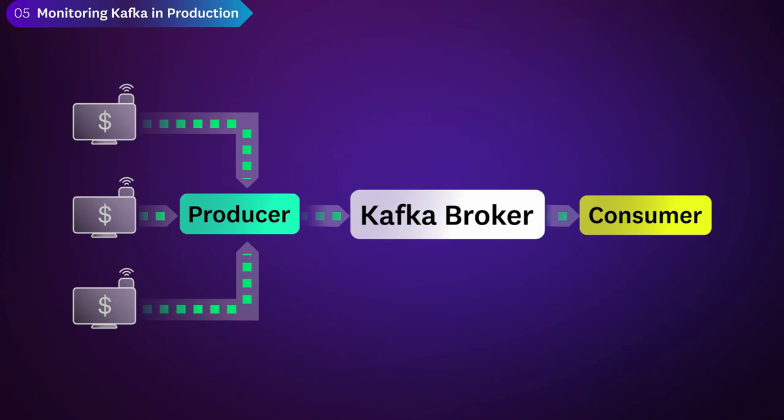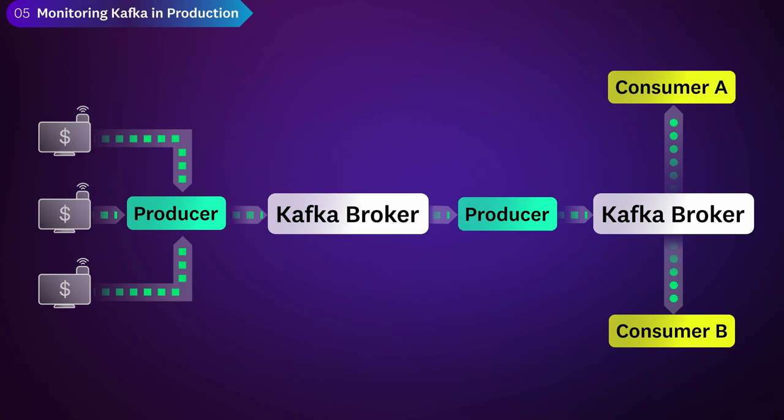Kafka lends a good deal of flexibility to developers. For example, after a consumer application processes streams of data, you can feed that data back into Kafka for consumption by other applications. In other words, the consumer of a data stream becomes the producer of another data stream. Hundreds or even thousands of derivative data streams can build on each other. Companies that adopt Kafka often end up creating complex data pipelines to connect multiple streams of data together. That is the power of Kafka.